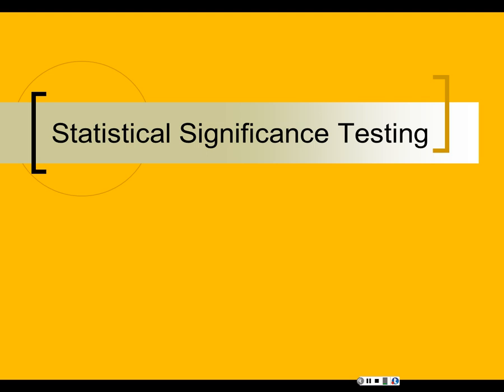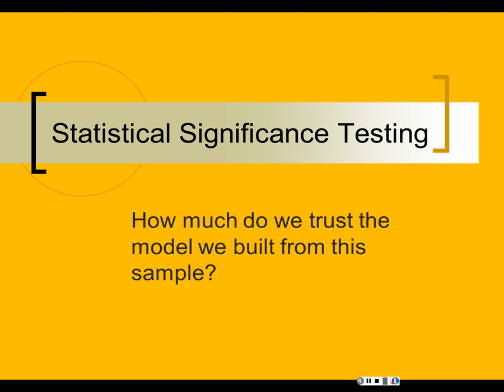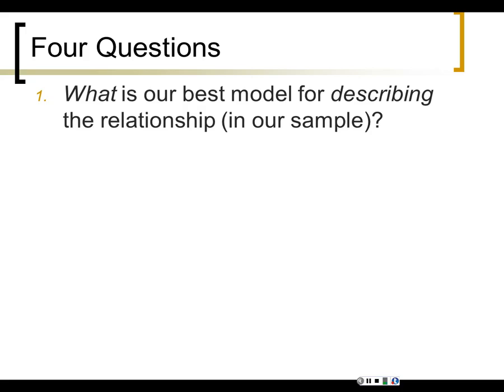Now we're going to move to what we always do — just like with t-tests and chi-square — we're going to talk about procedures for trying to come up with good estimates for what's going on in the population. Another way to say that: how much do we trust that this model we built from our sample is reflecting something real, something going on beyond just this sample? We know what we have in our sample — how much can this tell us about the population?